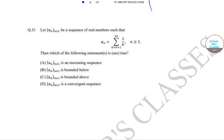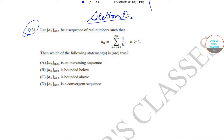Hello students, welcome to Soros Classes. Today we will be solving the IIT JAM Mathematical Statistics question paper of year 2018. We will be starting with Section B, which has multiple choice questions where more than one option can also be correct. We'll start with question number 31.